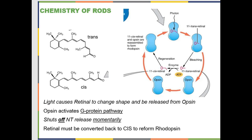Retinol comes in two different shapes — trans and cis. You just need to know that it comes in two different shapes; you won't be asked to differentiate them on an exam. In the dark, operational rhodopsin has the opsin with the bent retinol in it. When light hits it, energy from the light causes a chemical rearrangement that causes the retinol to straighten out and fall out of the binding pocket. This activates the opsin.